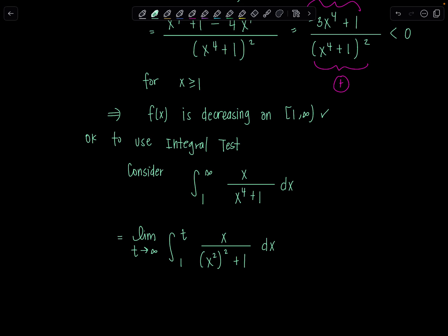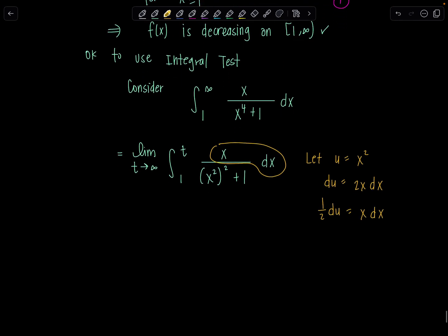You're going to do a u-substitution. Let u equal x squared, then du equals 2x dx, which is almost what we have — we just need to get rid of the 2, so one-half du equals x dx. You also need to change your limits of integration: these limits belong to x, so u of 1 is 1 squared, which is just 1, and u of t is t squared. So 1 and t squared are the new limits of integration.